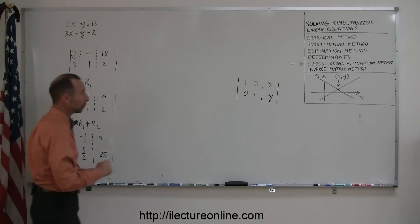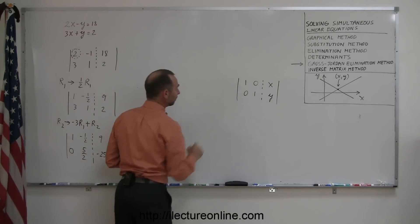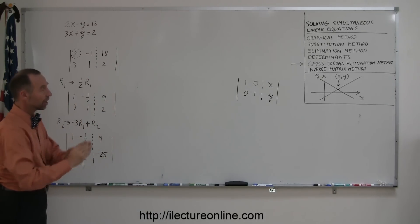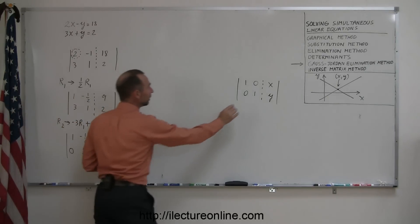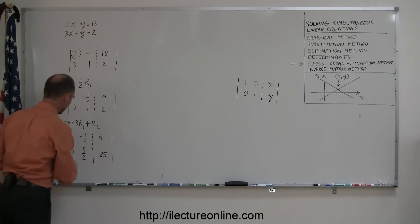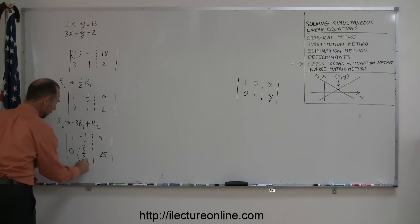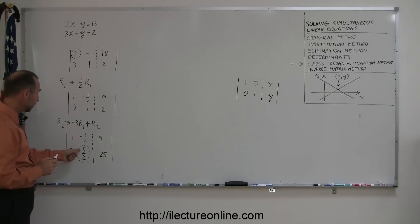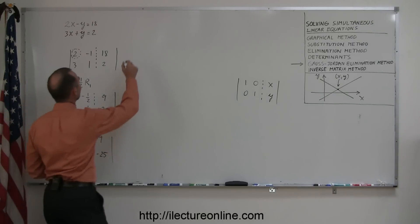All right. The next step is I want to get this number to be a 1. So I move over to the second column. I go to where I need a 1, and that's in this location right here. I want to turn this number into a 1. I can do that by multiplying this by its reciprocal. If I multiply this by 2 fifths, this will turn into a 1. Of course, if I multiply this by 2 fifths, I have to multiply this by 2 fifths.